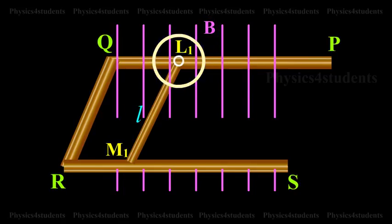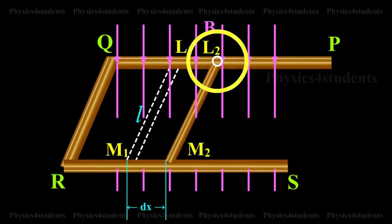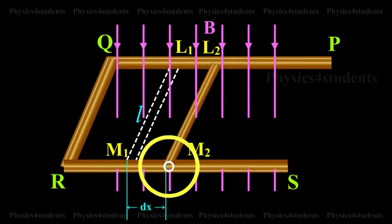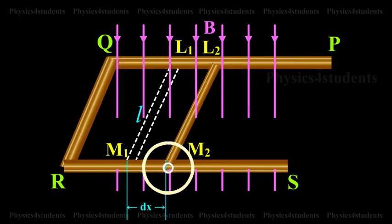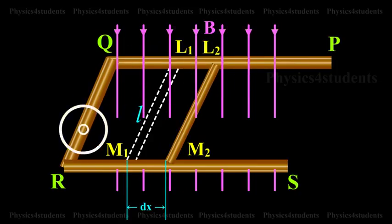The closed area of the conductor is L1QRM1. When L1M1 is moved through a distance dx in time dt, the new area is L2QRM2.